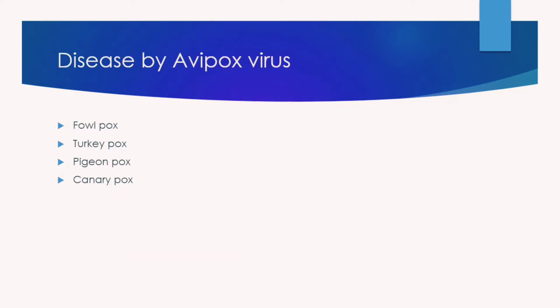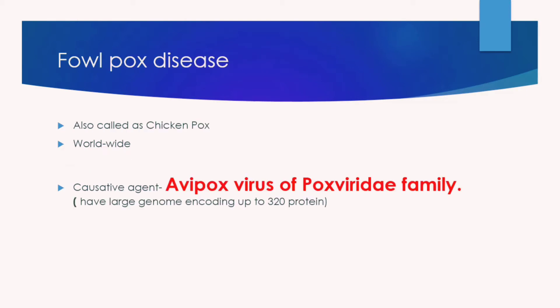Avipox virus causes disease in various avian species, including fowl pox, turkey pox, pigeon pox, and canary pox. Fowl pox disease is also called chicken pox. It is a worldwide disease distributed in most countries of the world.